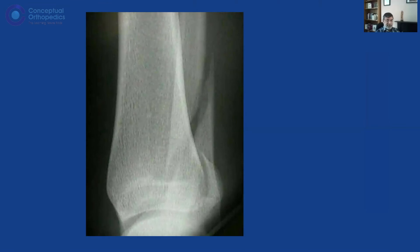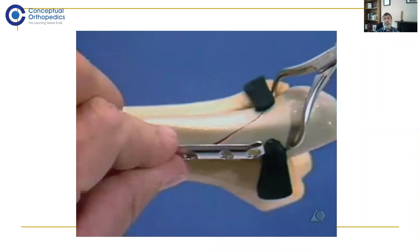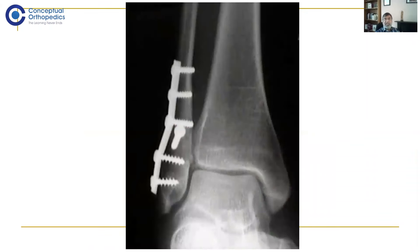For example, a simple fibular fracture can be fixed in many ways. Sometimes a plate is placed posteriorly to prevent gliding of the fragment, with no screw in the distal fragment — you need to understand the mechanism of that fixation. Alternatively, another surgeon may fix it with a lag screw and then a plate, and you need to understand why these approaches differ even for a similar fracture.